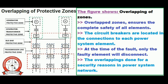The circuit breakers are located in the connections to each power system element so that at the time of a fault, only the faulty element will disconnect. Due to overlapping of the protective zones, if a fault occurs in the overlapped area, more circuit breakers than the minimum necessary will operate. This creates a chance of unnecessary tripping of breakers. However, for security reasons, overlapping is still done in practical power system networks, as there are very few chances that a fault occurs in the overlapped area.